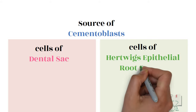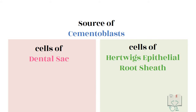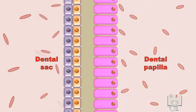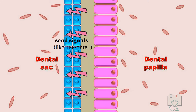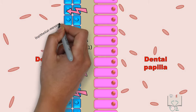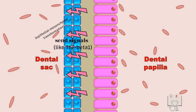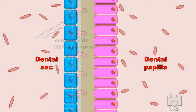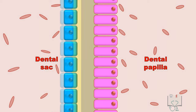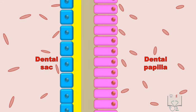Second source: cells of Hertwig's epithelial root sheath. After deposition of radicular dentine, the cells of Hertwig's epithelial root sheath receive signals due to which they themselves undergo epithelial-mesenchymal transformation and differentiate into cementoblasts, which subsequently deposit cementum.